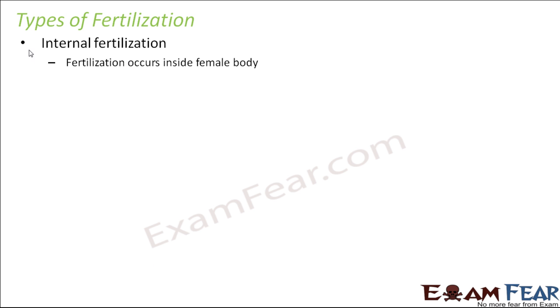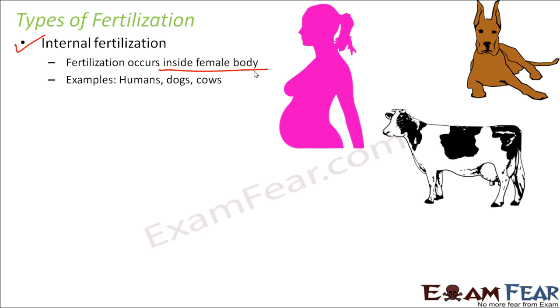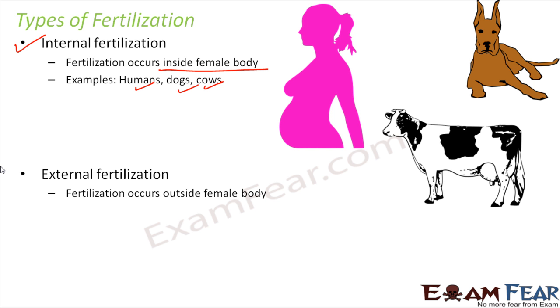Fertilization can be of various types. Broadly there are two types: internal fertilization and external fertilization. In internal fertilization, the process of fusion takes place inside the female body. The best example is human beings — the fusion takes place in the fallopian tube, inside the female body. Internal fertilization also takes place in other organisms like dogs, cows, and cats.